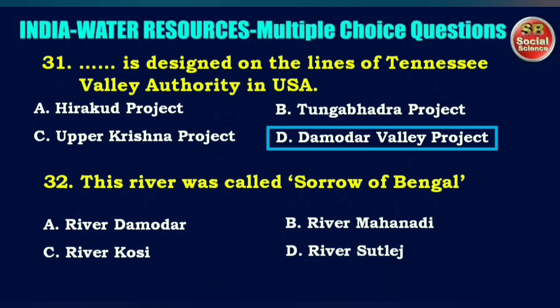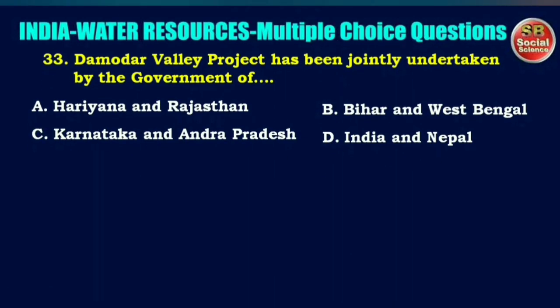This river was called the Sorrow of Bengal — options are River Damodar, River Mahanadi, River Kosi, or River Sutlej. The right answer is option A: River Damodar.